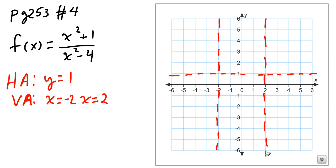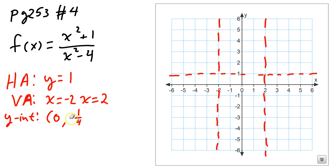Now let's go and try to find some y-intercepts. To find a y-intercept, I plug 0 in for x and see what y is. So at x equals 0, if I put a 0 in here and here, don't I just get negative 1 fourth for my y-intercept? So I know my graph will cross at (0, -1/4).